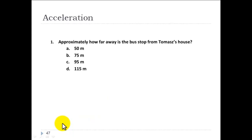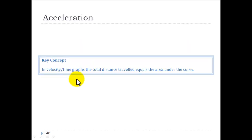We can handle this. Approximately how far away is the bus stop from Thomas's house? 50m, 75m, 95m, 115m. Key concept here is in velocity versus time graphs, the total distance travelled equals the area under the curve. I can go through an explanation of why that is the case, if you like. Or we can just remember that velocity versus time, total distance is the area under the curve.